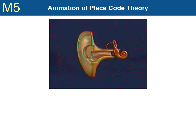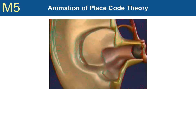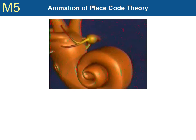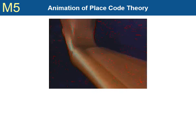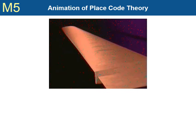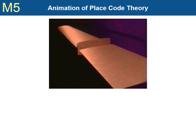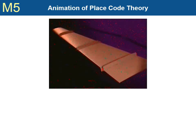Here is an animation of the place code theory. Zoom down the ear canal, see the tympanic membrane moving, uncoil the cochlea, and reveal the inner structure. Lower tones activate near the apex; higher tones activate near the base.